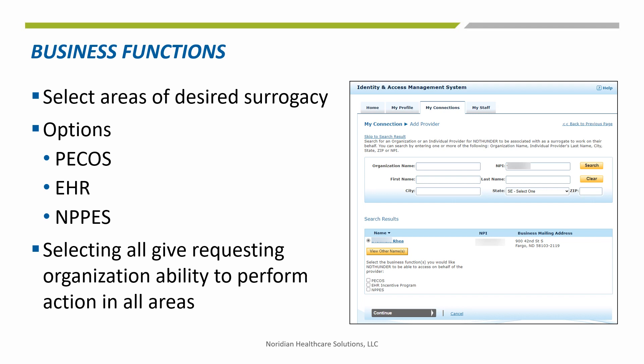Select the radio button next to the name and choose the desired business functions. Selecting all of them will provide the requesting organization the ability to perform actions on the provider's behalf in all areas. Once the choice has been made, click Continue.